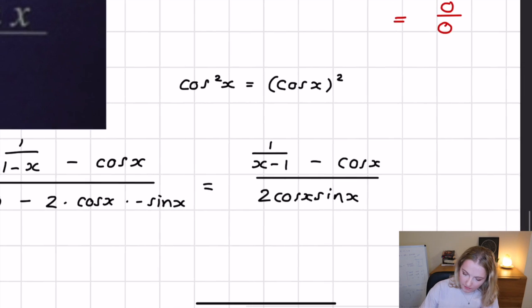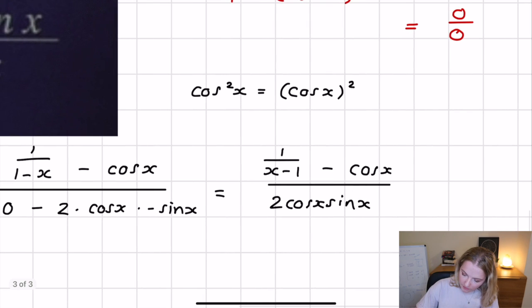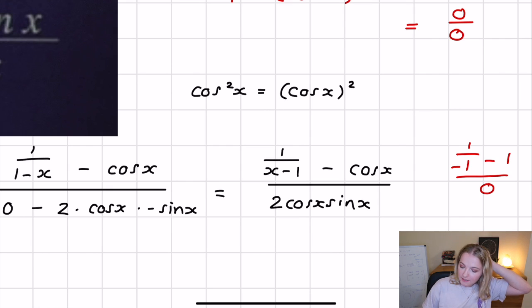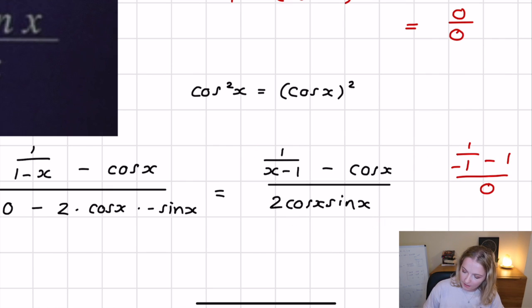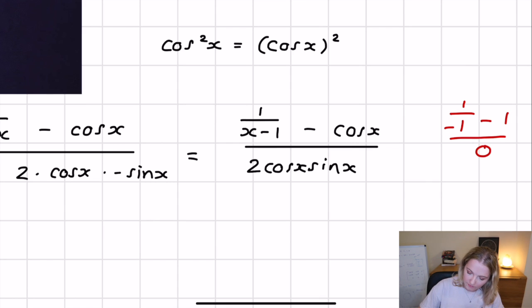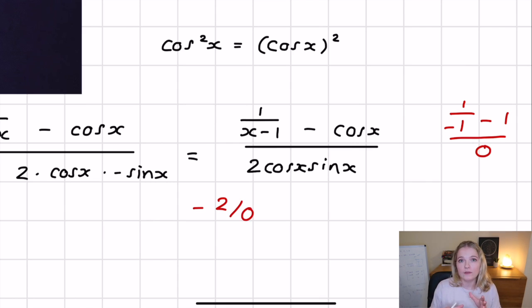Now if we plug in x equals zero, we end up with one over one minus one, which is minus one, over zero. So what we get is minus two over zero, which means the limit either doesn't exist or is infinite. So what we can do is take one-sided limits and see where the function is approaching on either side.